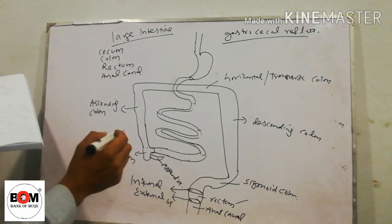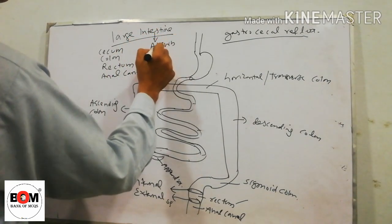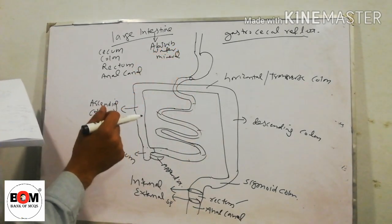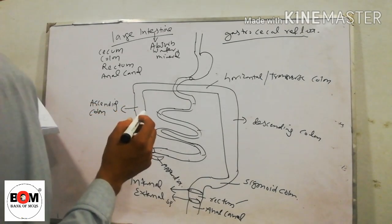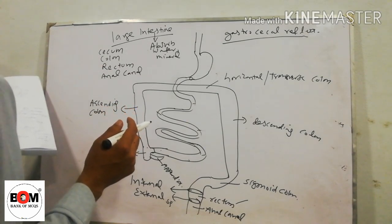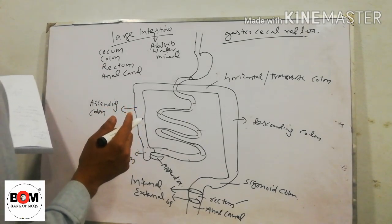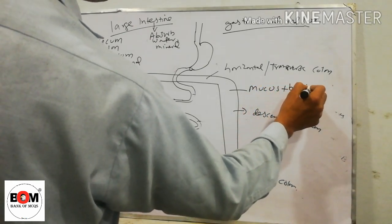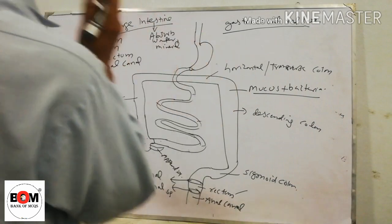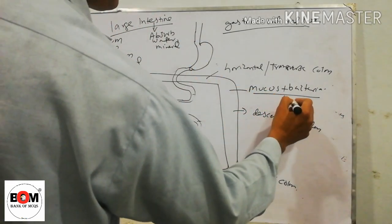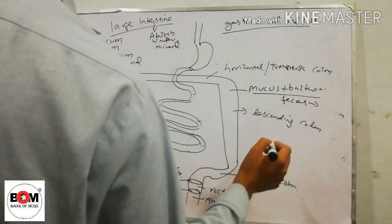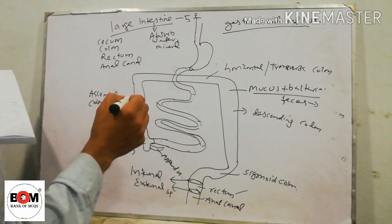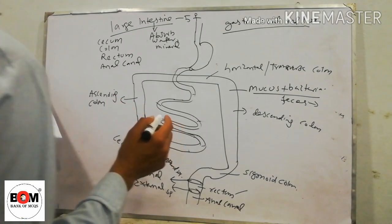The function of the large intestine is to absorb water and minerals from the waste. When the water and minerals are absorbed, the remaining waste materials are compressed so that they can easily be removed. Inside the large intestine, there are mucus and bacteria, which combine with the waste product to form feces, which are then removed from the body. The large intestine is 5 feet long but its diameter is more than the small intestine.